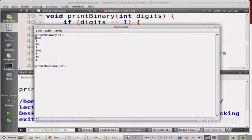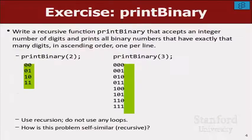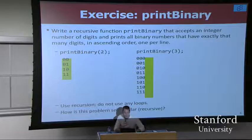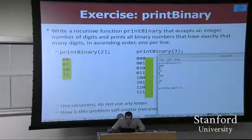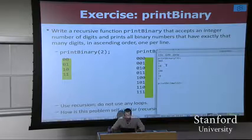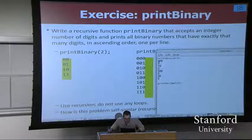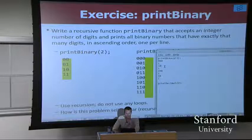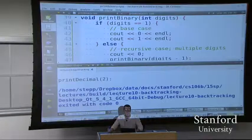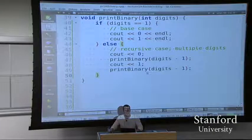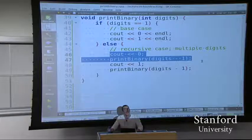That's not quite right. We printed zero-zero-zero as the first line, which is correct, but then we get wrong output from there. This code is printing some portion of the right output but not doing quite the right thing. This is not going to be easy to patch because it's a fundamentally flawed understanding. If I call print binary with digits minus one - let's say digits is three - that prints four lines of output. Printing a single zero isn't going to put a zero in front of each of those four lines.